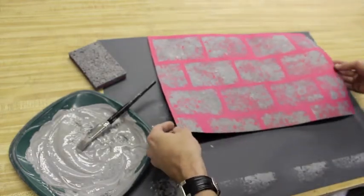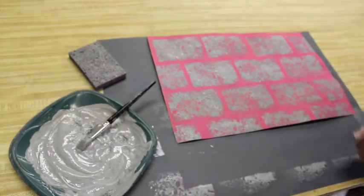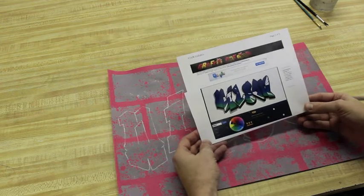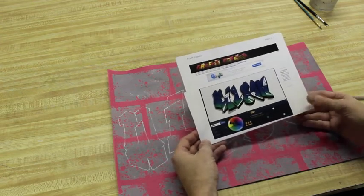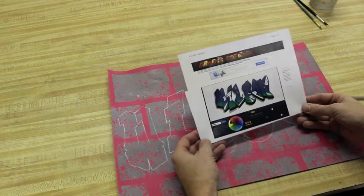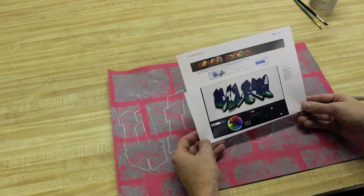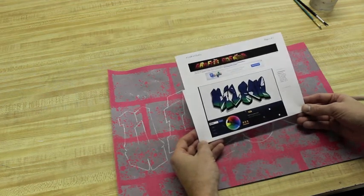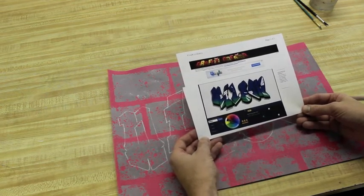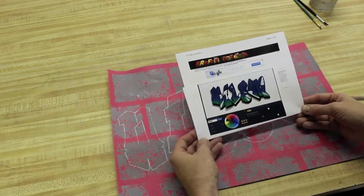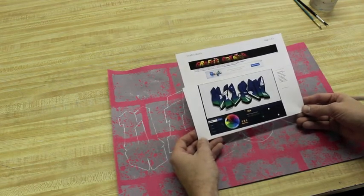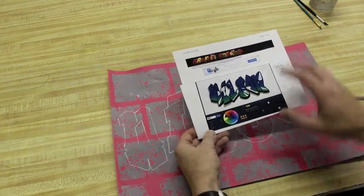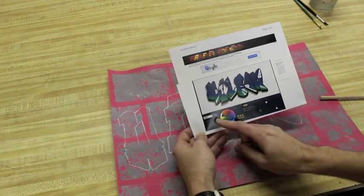The next step is you're going to go online to a website called graffiti creator, that's G-R-A-F-F-I-T-I C-R-E-A-T-O-R dot net. This is a free software program where you can use Adobe Flash to create graffiti. They have tons of fonts and a lot of interesting things on that website, so I'd suggest going on there and messing around with it and getting accustomed to it.